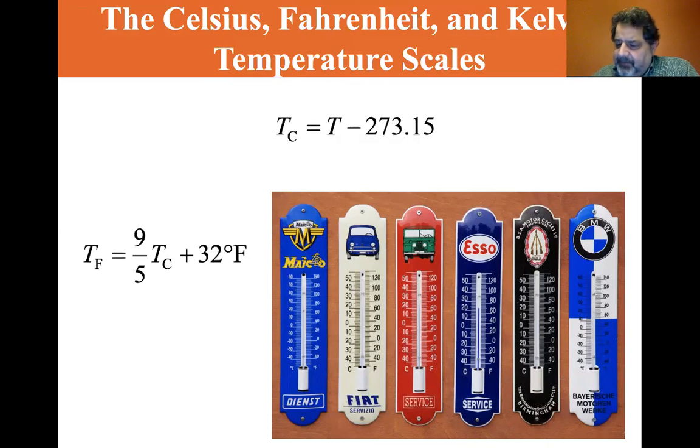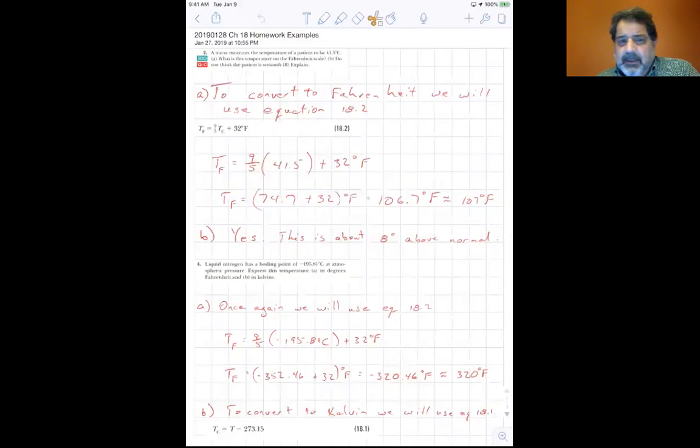And let me take the time to do some quick problems here, some homework examples, and I'll post these homework examples. A nurse measures the temperature of a patient to be 41.5 degrees C. What is the temperature on the Fahrenheit scale? That's part A. Part B, do you think the patient is seriously ill, and explain why. Well, to convert to Fahrenheit, we will use equation 18.2.